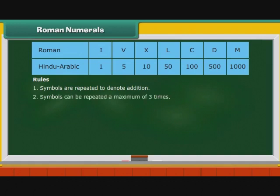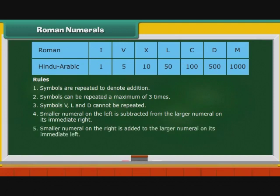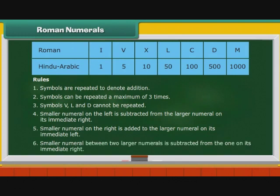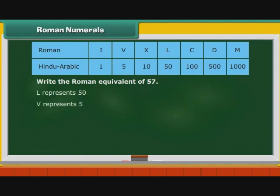Rule 1: Symbols are repeated to denote addition. Rule 2: Symbols can be repeated a maximum of 3 times. Rule 3: Symbols V, L, and D cannot be repeated. Rule 4: A smaller numeral on the left is subtracted from the larger numeral on its immediate right. Rule 5: A smaller numeral on the right is added to the larger numeral on its immediate left. Rule 6: A smaller numeral between two larger numerals is subtracted from the one on its immediate right. Let us form Roman numerals from Hindu-Arabic numerals. Write the Roman equivalent of 57: L represents 50, V represents 5, II represents 1+1=2. Therefore, 57 = LVII.